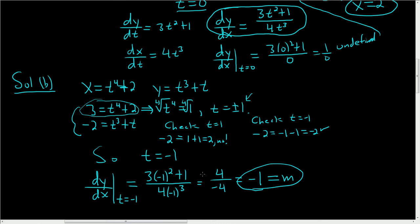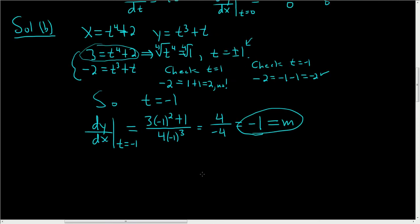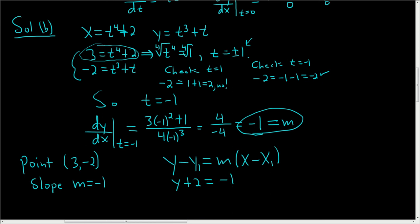So to finish, we'll use the point-slope formula for a line. Our point was 3, negative 2, and our slope is m equals negative 1. So y minus y1 is equal to m times x minus x1. So y1 is negative 2, so we get y plus 2 because there's two negatives. And m is negative 1, x minus 3.